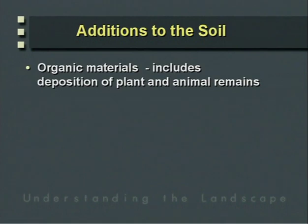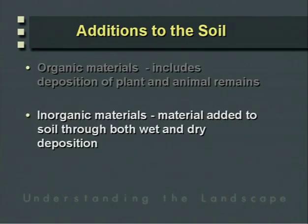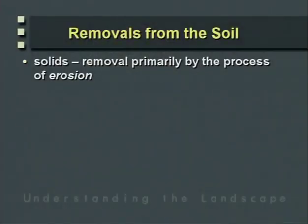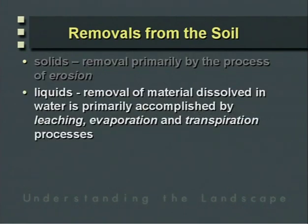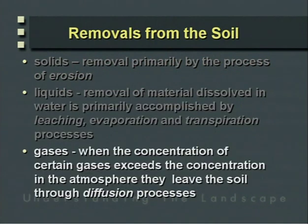Additions to the soil system encompass both organic and inorganic materials. Organic additions result primarily from the death and decomposition of plant and animal remains, adding mass to the soil volume. Inorganic materials can be deposited in wet and dry deposition and as a result of depositional processes within a hill slope. Removals occur as solids, liquids, and gases. Solid removals consist primarily of erosional processes. Liquids are removed by leaching, evaporation, and transpiration. Gases leave by diffusion — CO₂ concentration in soil is 10 to 100 times higher than in the atmosphere, resulting in its diffusion out of the soil.